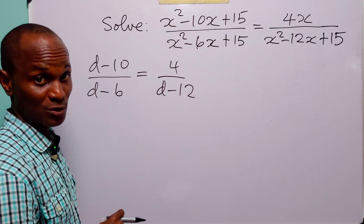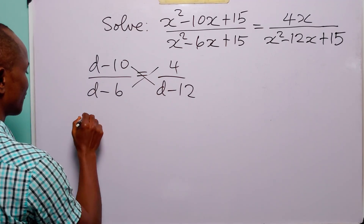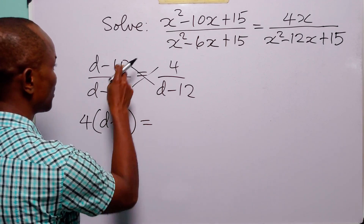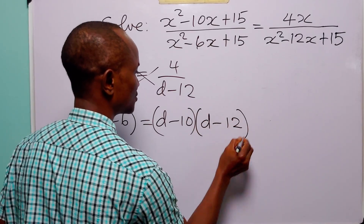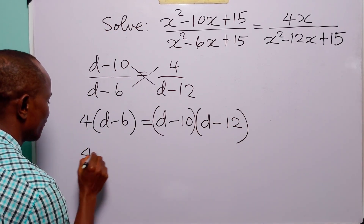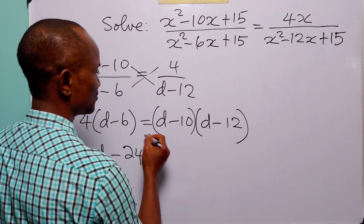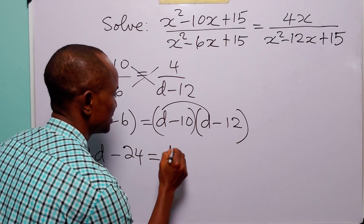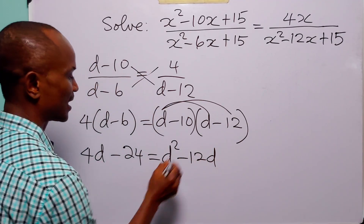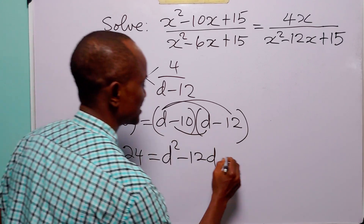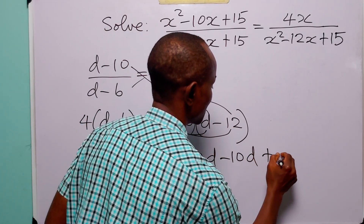Now you can see that we have a much simpler rational equation to solve. To solve this equation, we start by cross multiplying — this times that is equal to this times that. So that is: 4 times d minus 6 is equal to d minus 10 times d minus 12. Opening the left bracket, we have 4d minus 24. Opening the right brackets, we have d squared minus 12d minus 10d plus 120.